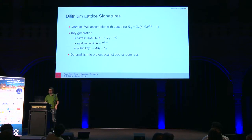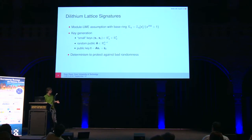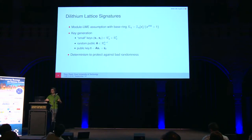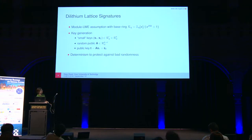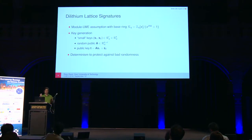We focus mainly on Dilithium. Dilithium is based on a module LWE assumption, with polynomials over a base ring and vectors and matrices of these polynomials. In key generation, you have two vectors of polynomials with small coefficients in a specific range, a random public matrix A, and the public key is A·S1 + S2. Dilithium also uses determinism to protect against randomness.